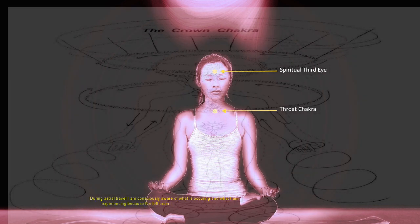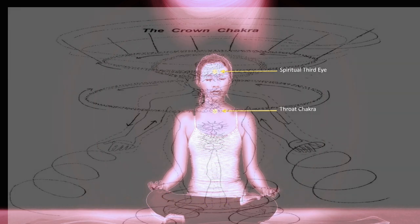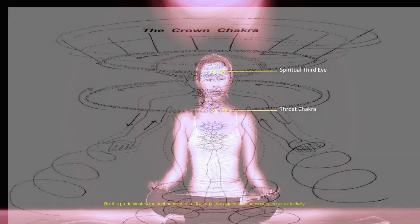During astral travel, I am consciously aware of what is occurring and what I am experiencing, because the left brain is rewired into the experience. But it is predominantly the right hemisphere of the brain that guides and coordinates the astral activity.